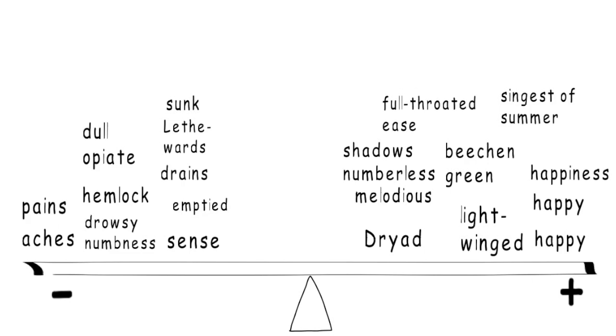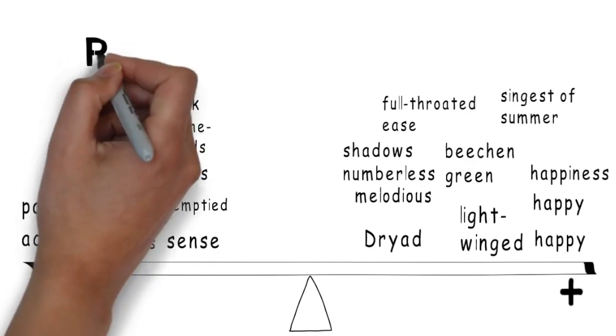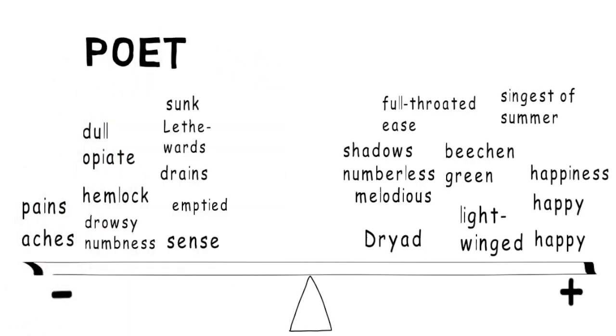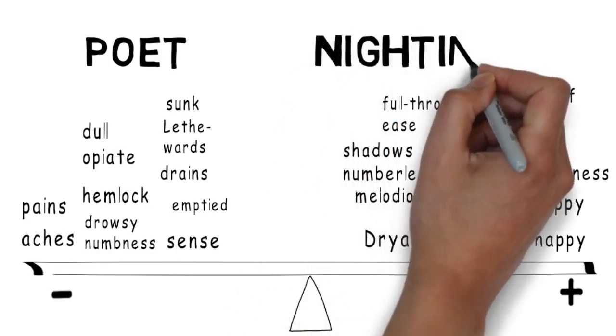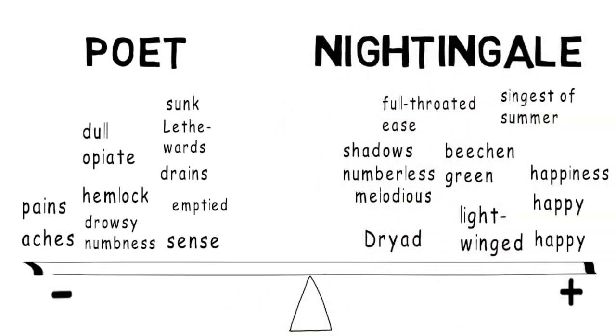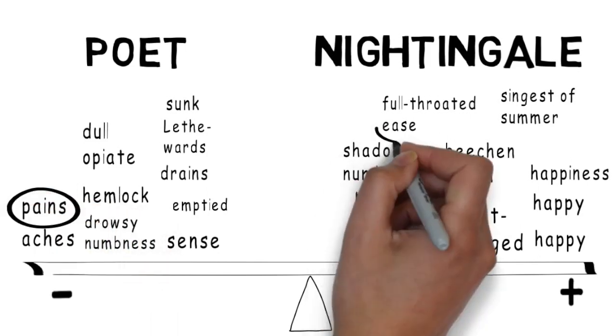So there's a very clear contrast going on here between the negative words in the first part of that opening stanza, and the positive words in the second half. More than that, we can say that the negative words all relate to the poet, whereas the positive words all relate to the nightingale. But it goes even further than that. We can see some very specific contrasts between these two groups of words. The most basic contrast is perhaps between the word pains in the first part, contrasted with the word ease in the second half.